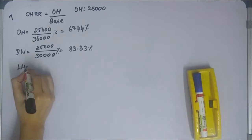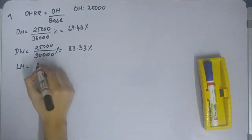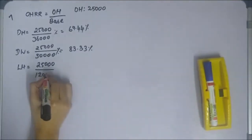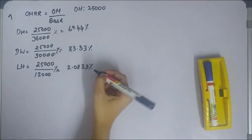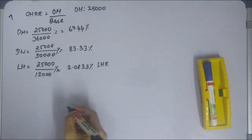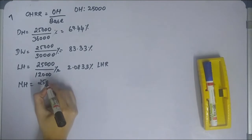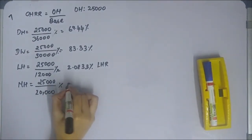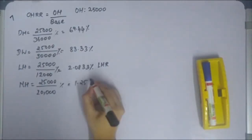For the labor hours method: overheads chargeable to the department are 25,000 divided by labor hours of 12,000, giving a labor hour rate of 2.0833 rupees per hour. For the machine hour rate: overheads 25,000 divided by hours of machinery operation 20,000, giving a machine hour rate of 1.25 rupees per hour.